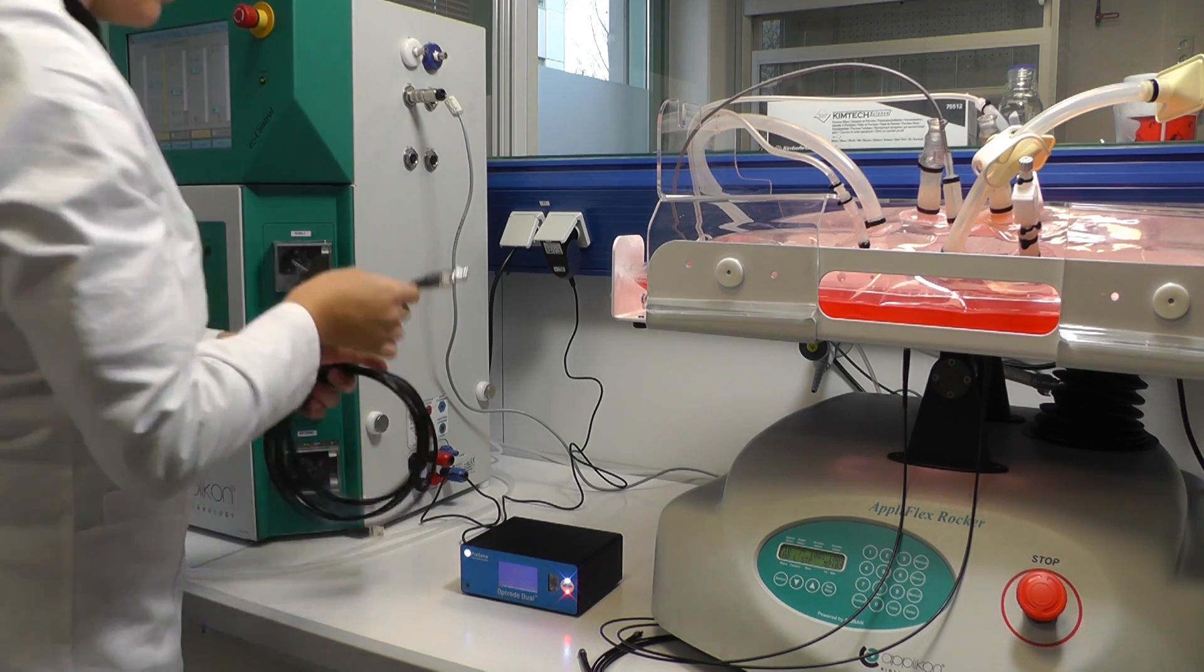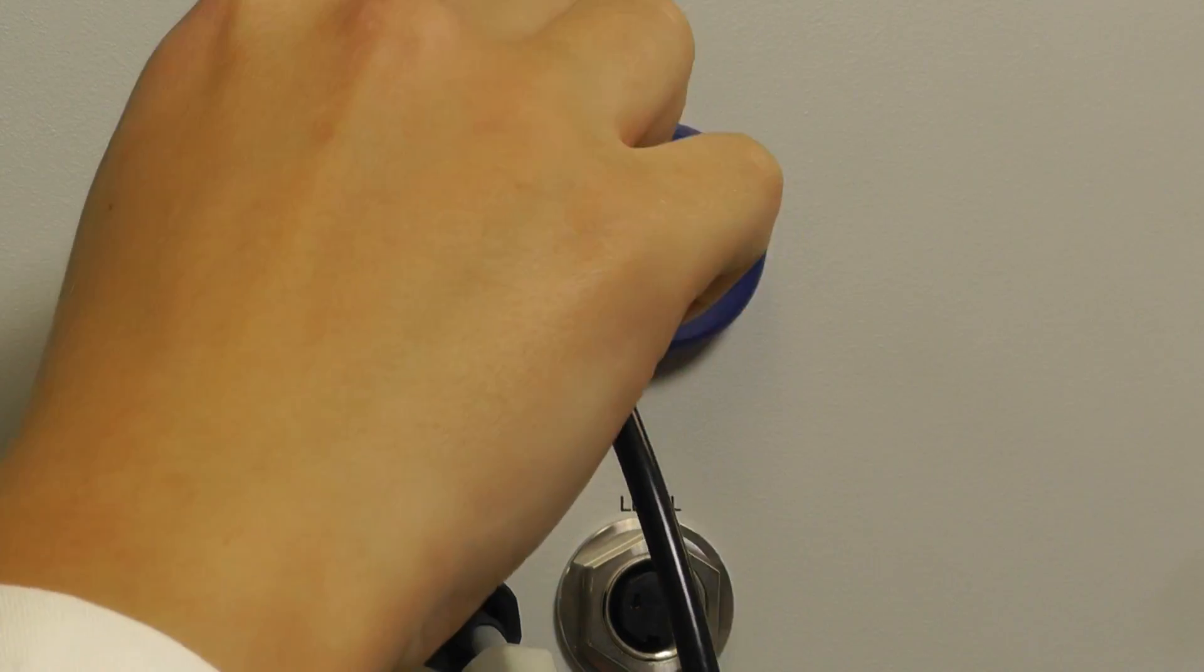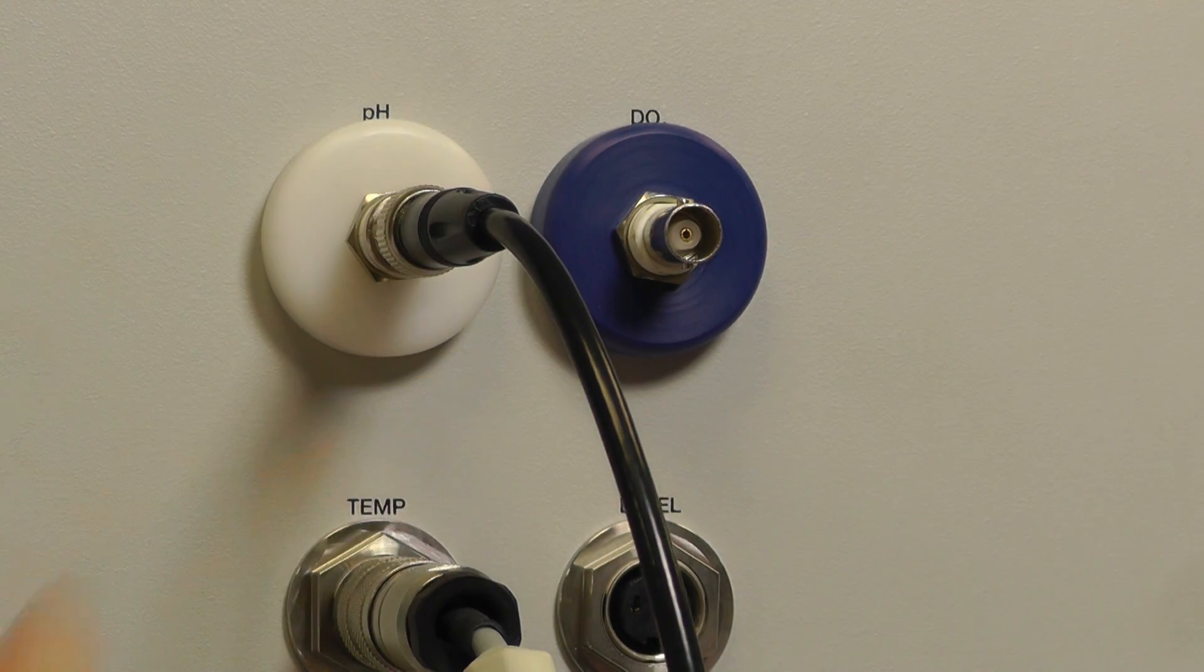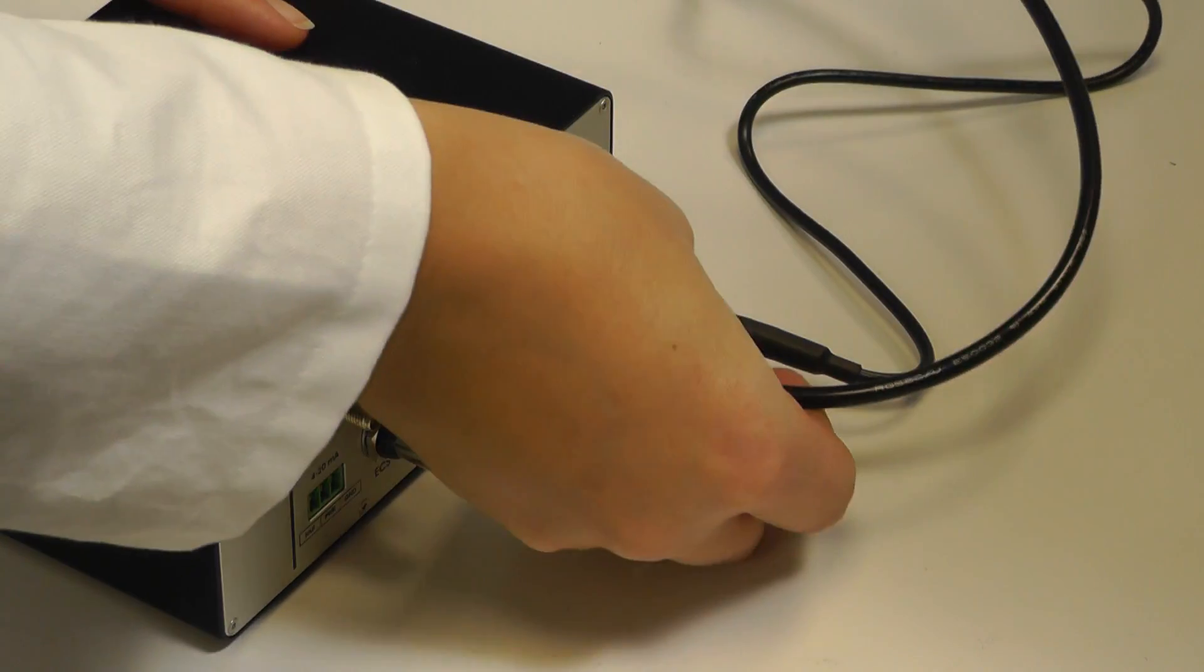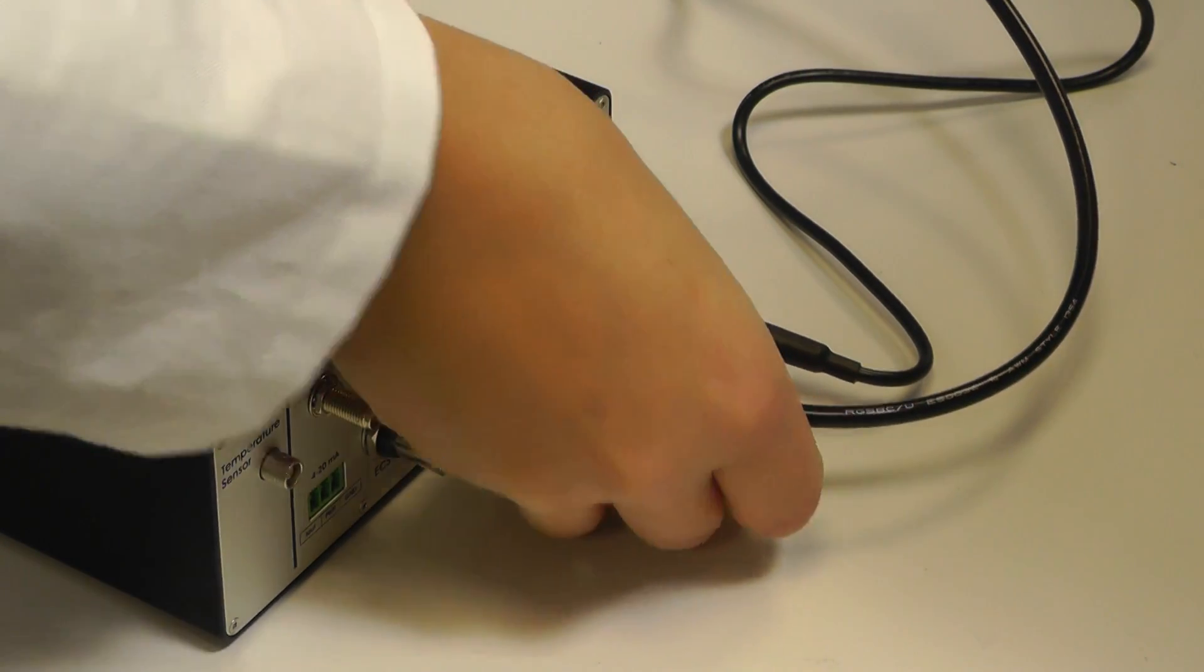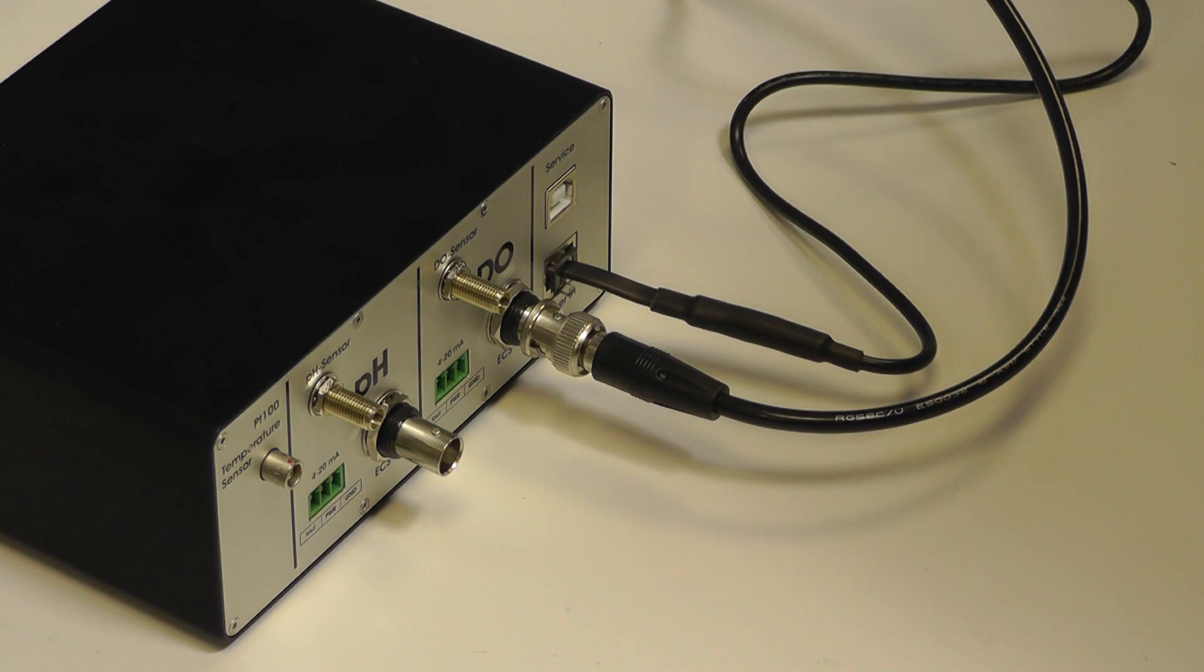For controllers having BNC connectors for DO and PH output, use the provided cables and attach them to the DO and PH input of your controller. Then connect the cables to the DO and PH output on the Optra Dual back panel respectively. Make sure you don't mix up oxygen and PH connectors.